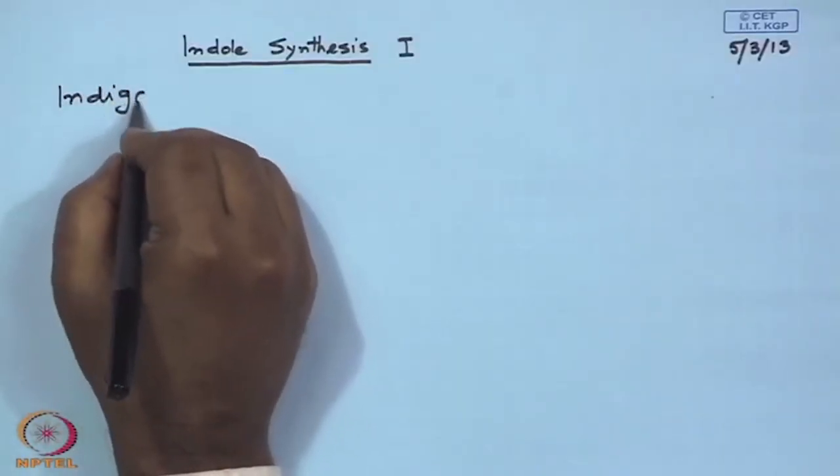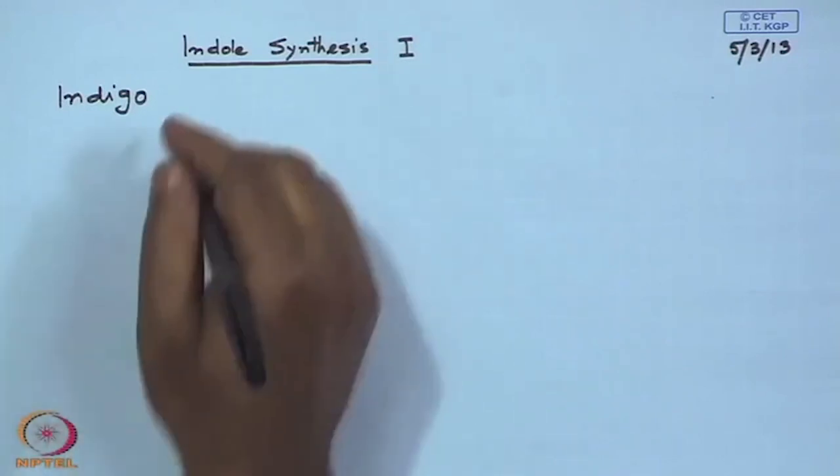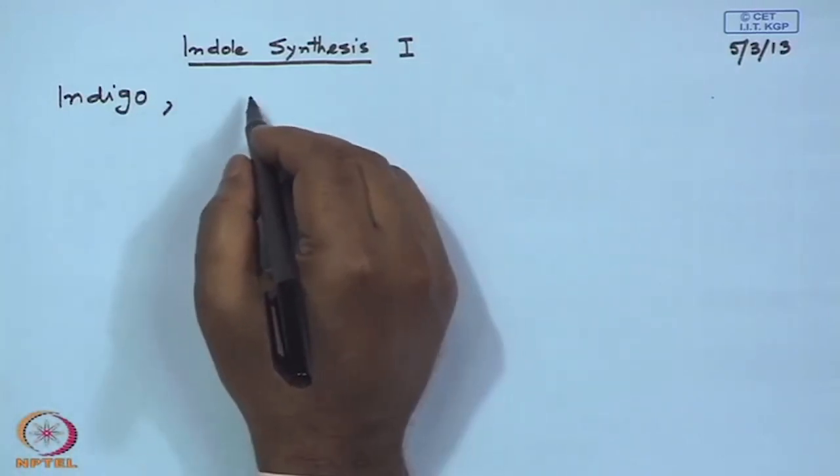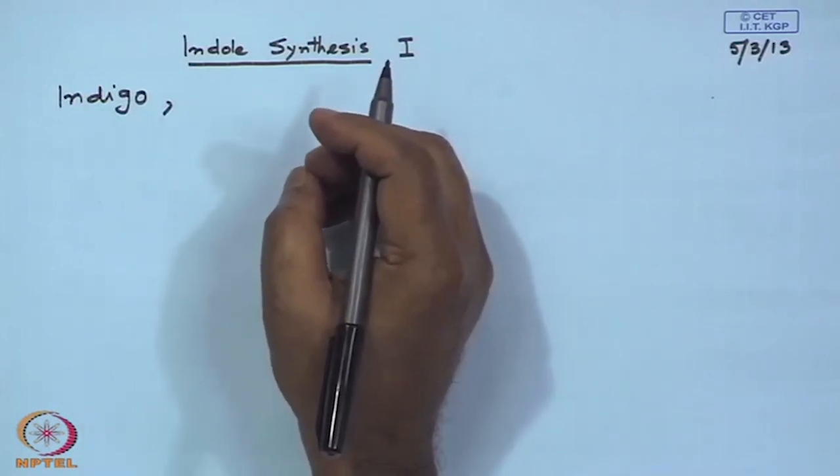What are the important indole compounds? There are two different kinds — natural and synthetic. Among the natural indole compounds, what are the important ones do you know of? You have to think about it — what are the natural indole compounds you know of? At least 10 different natural indoles. I think what comes to my mind: Indigo. What else? I am talking about natural indole compounds.